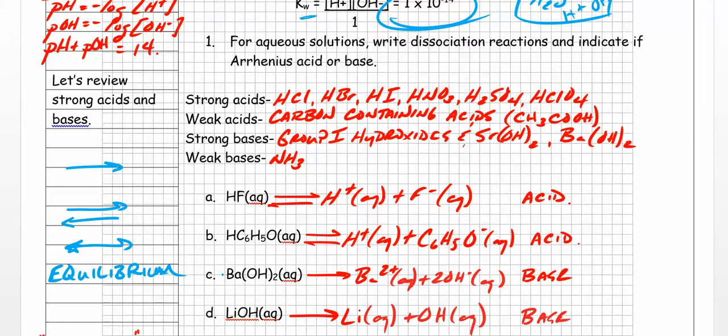For weak acids, here are two rules. Rule one: if it's not a strong acid but you know it's an acid, it's a weak acid. Rule two: any carbon-containing acid is weak - for example, CH3COOH, acetic acid, is a weak acid. Strong bases include all Group 1 hydroxides, plus strontium hydroxide and barium hydroxide from Group 2. For weak bases, the prototype to remember is NH3 - ammonia is a weak base.